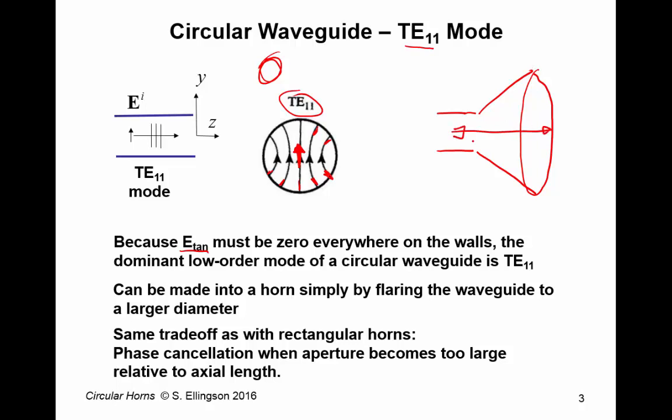In order to increase the directivity of the horn, we have to make the axial length longer and longer to avoid this problem of phase cancellation, where we have this variation in phase where some sections of the aperture start to cancel out with other sections of the aperture. So, we end up with a built-in limitation on how high a directivity we can achieve for a given axial length.